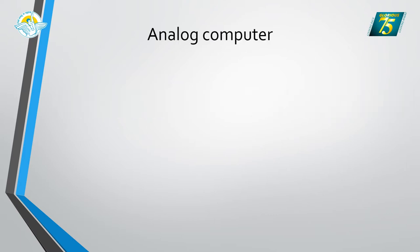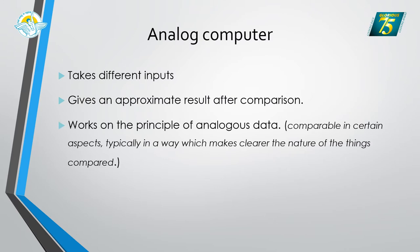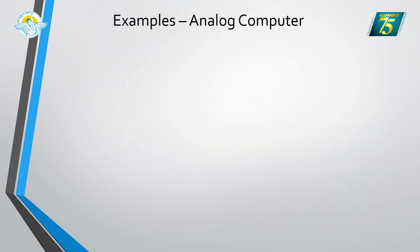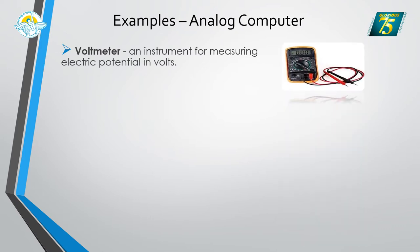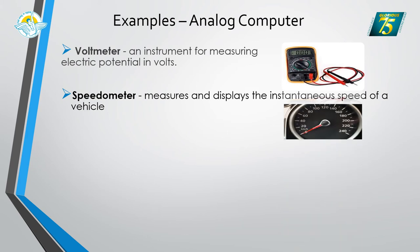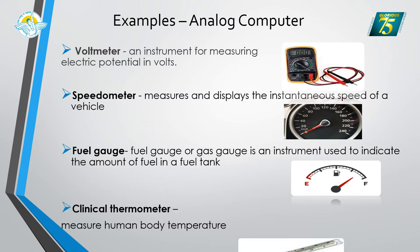According to purpose, the first type is the analog computer. It takes different inputs, gives approximate results, and works on the principle of analogous data — meaning two similar things are compared to arrive at a common result. Examples include an analog clock, voltmeter (measuring electric potential in volts), speedometer (measuring vehicle speed), fuel gauge (measuring fuel in a tank), and clinical thermometer (measuring body temperature).